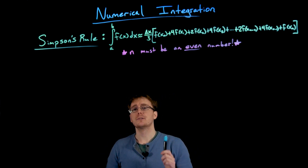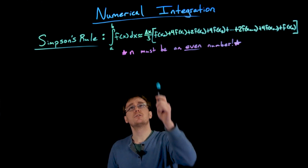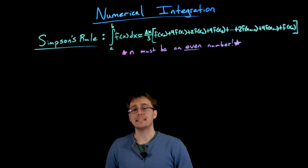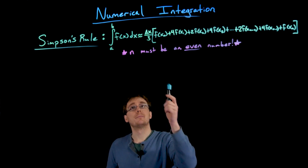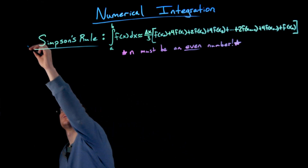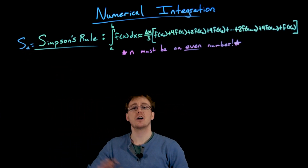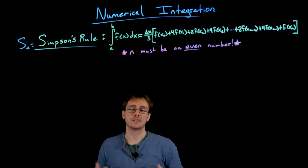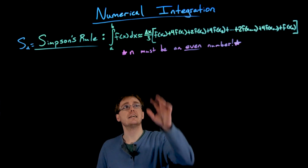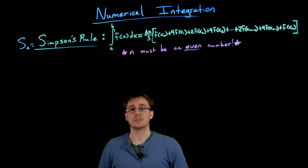The other really important note we can never forget when using Simpson's rule is that it only applies when n is an even number. Remember n is that subscript — we denote Simpson's rule as S sub n — and that's telling us how many subintervals we are using in the approximation. So we're only going to be allowed to use Simpson's rule if we have an even number of subintervals.